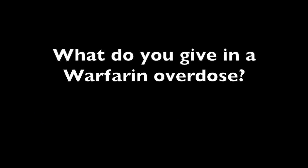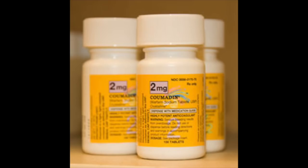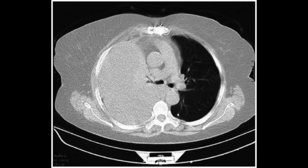The last topic is warfarin overdose. Most of the time high INRs from warfarin are from misdosing rather than true overdose, but there are many treatment options. Warfarin, also called Coumadin, can cause serious internal bleeding. Here on this CT you can see a total hemothorax caused by warfarin — this patient's INR was 5 and the bleeding in their chest overtook them. They need reversal of their warfarin to get the INR back into the right range.